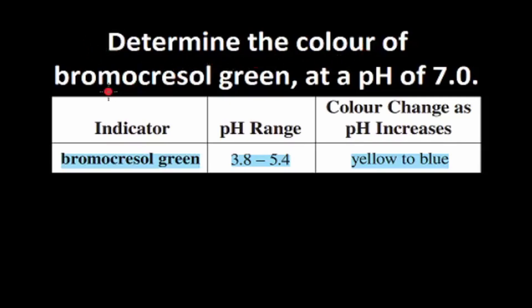Determine the color of bromo-cresol green at a pH of 7.0. This is the information we have for our indicator. The pH range is from 3.8 to 5.4, and the color change as pH increases is from yellow to blue.